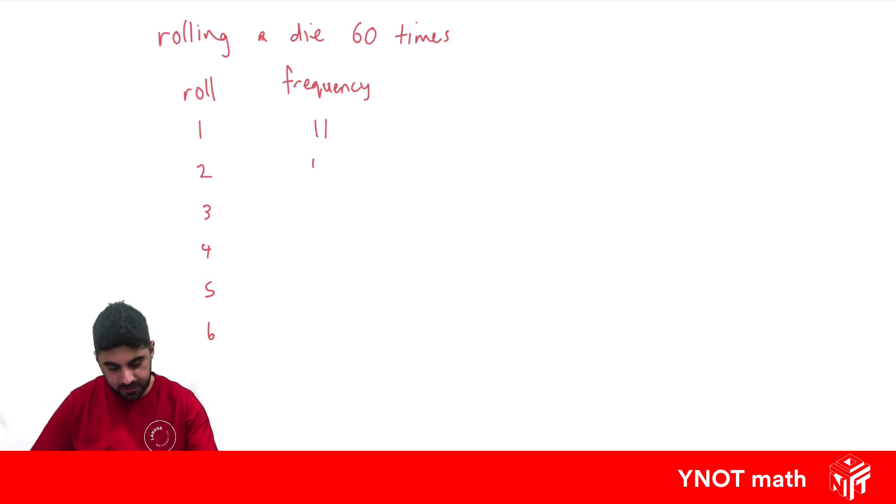So it's 11 ones, 10 twos, 8 threes, 12 fours, 14 fives, and 5 sixes.